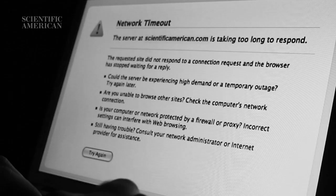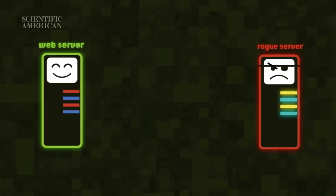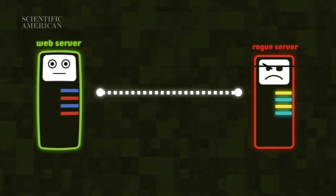It happens all the time. You're trying to make a last-minute purchase or pay a bill online, but you can't get the website to load. A technical glitch, or maybe something more nefarious — the website could be under attack. One of the most common ways to bring down a website is to flood the servers running it with so much traffic they simply can't handle the volume. This is called a denial of service attack, and it can slow a website's performance to a crawl or force its owner to take the site down completely until the attack is over.